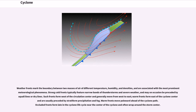Strong cold fronts typically feature narrow bands of thunderstorms and severe weather, and may on occasion be preceded by squall lines or dry lines. Such fronts form west of the circulation center and generally move from west to east. Warm fronts form east of the cyclone center and are usually preceded by stratiform precipitation and fog. Warm fronts move poleward ahead of the cyclone path. Occluded fronts form late in the cyclone life cycle near the center of the cyclone and often wrap around the storm center.